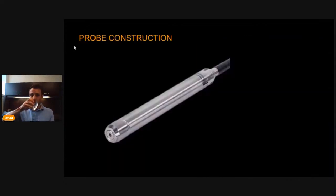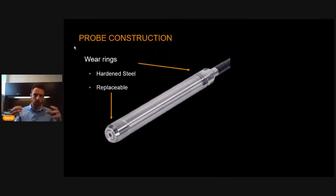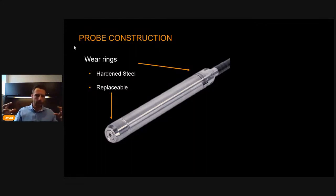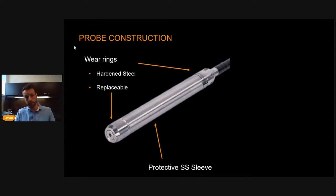This probe is built for the field — built sturdy with wear rings made of hardened steel that are replaceable. They're just a little bit bigger than the probe, so the probe sheet gets protected. Carbon steel can sometimes have rust and be tough, so those wear rings prolong the life of the probe. There's also a stainless steel protective sleeve as an added layer. For NFA, the fill factor we're looking at is about 86-87%, which gives an idea of the space required.